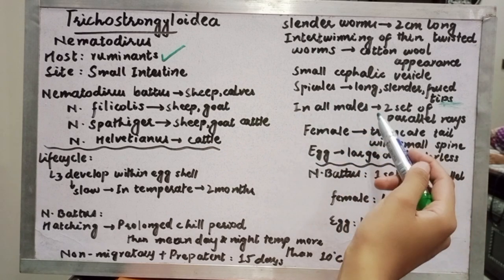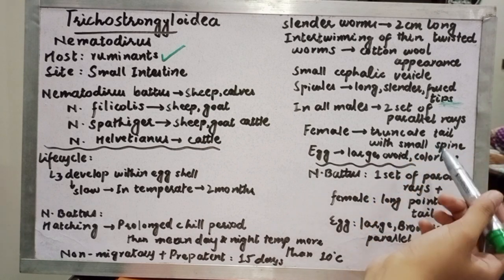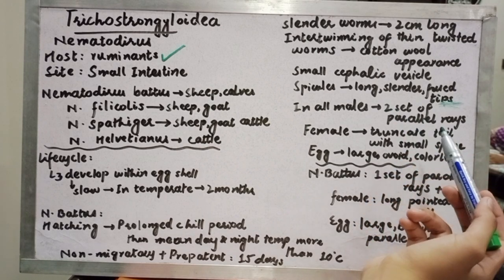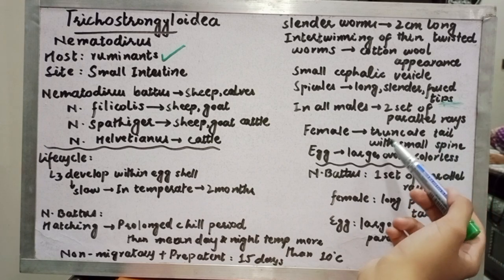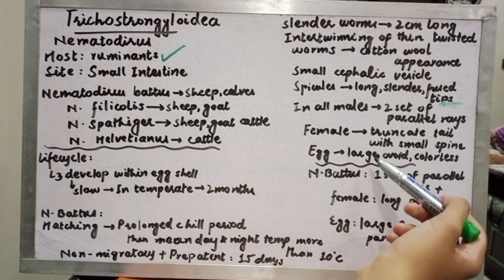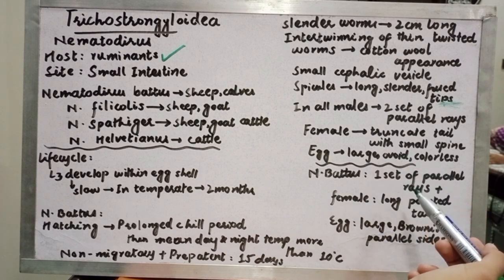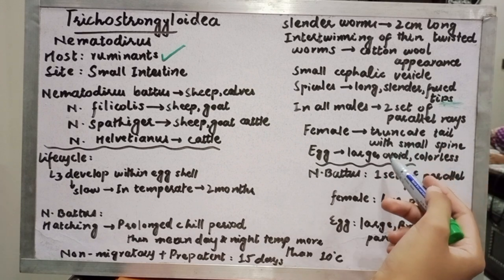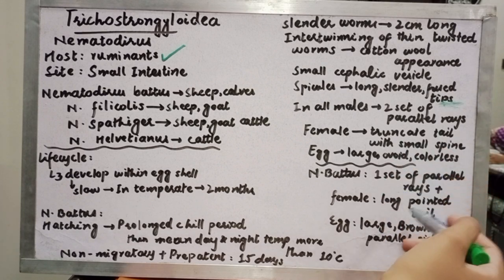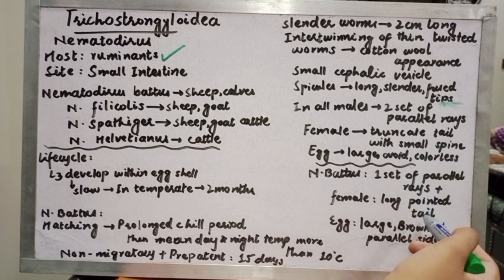This is the Nematodirus battus exception. While all other Nematodirus males have two sets of parallel rays, Nematodirus battus has only one set of parallel rays. Additionally, the female of Nematodirus battus has a truncate tail, whereas other species have a long pointed tail.